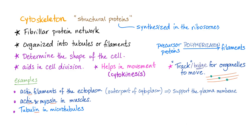The cytoskeleton, a group of structural proteins, synthesized in the ribosome, because this is what synthesizes protein through the process of protein translation. They are a network of fibrillar proteins. So, cytoskeleton is a group of proteins organized into tubules and filaments.